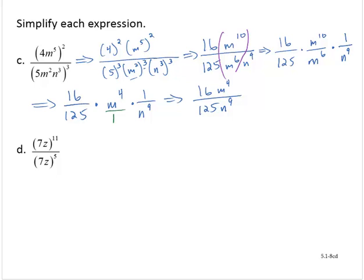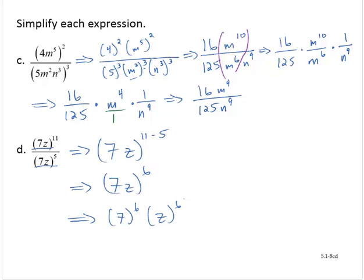Finally, we have 7z to the 11th over 7z to the fifth. Both factors are 7z, so I can use the quotient rule directly and write this as 7z to the 11 minus 5, which is 7z to the sixth power. That's then 7 to the sixth times z to the sixth. Using a calculator, 7 to the sixth power is 117,649. So the answer is 117,649 z to the sixth.